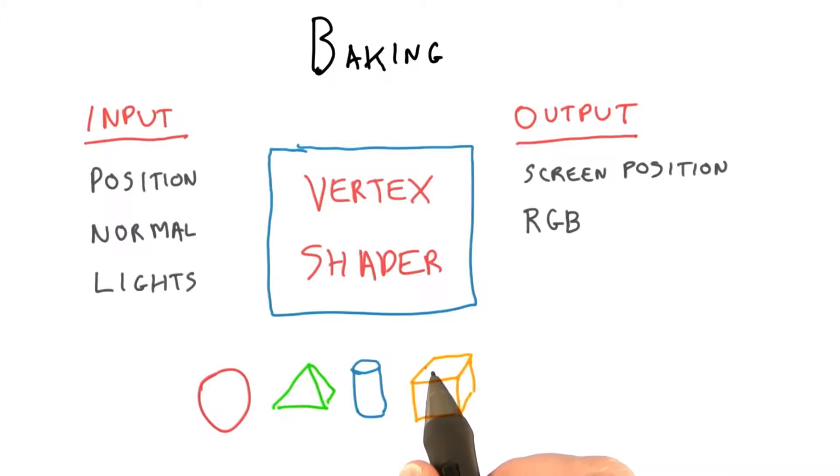One method of saving on GPU computations is to bake the lighting into the surfaces themselves. Say I have a scene with a bunch of diffuse objects, each with its own material color and with the surface normals stored at the vertices.